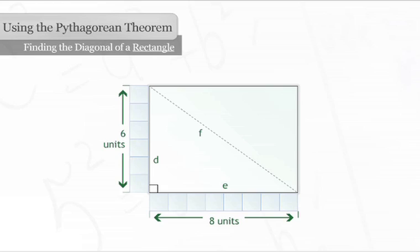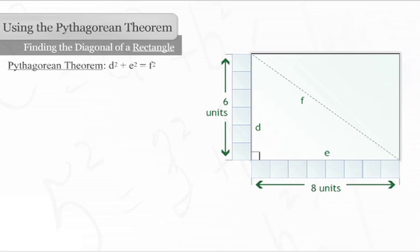If we plug d and e into the Pythagorean theorem, we have 6 squared plus 8 squared equals f squared. Now, we will find the length of the hypotenuse using the same steps as before.